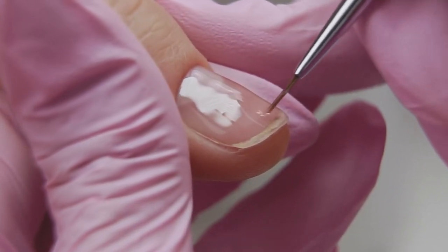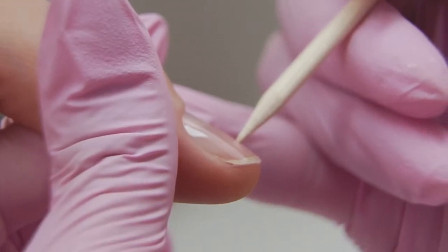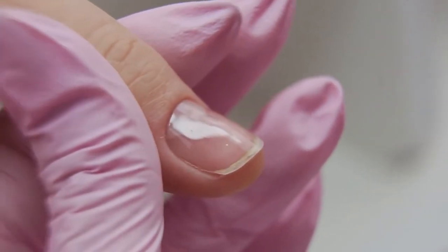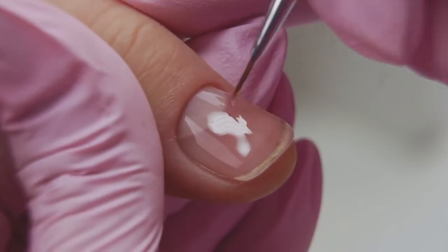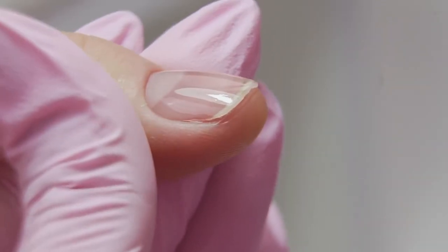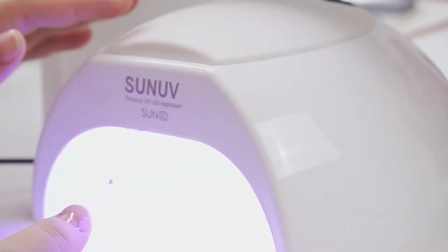Now apply a thin aligning layer. I'm applying it like this, since there is a bump in the center. I check the highlight, and if it's even, I send the nails to cure for 30 seconds.